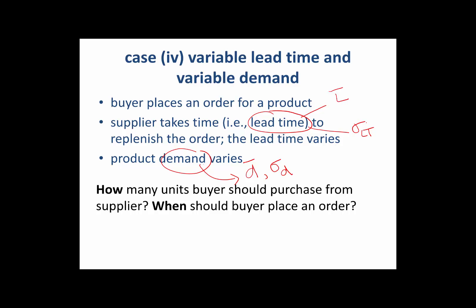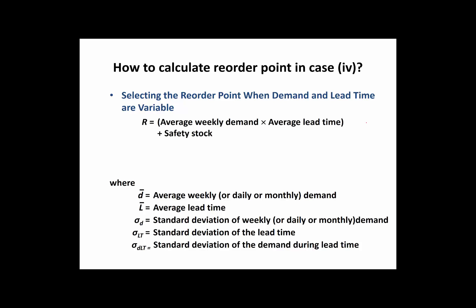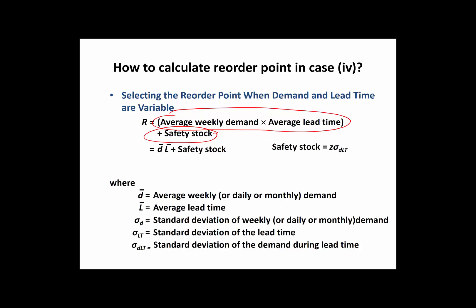In this realistic case, let's see how many units a buyer should purchase and when. First, we need to figure out how the reorder point changes. The reorder point equals a nominal value plus a safety stock. The nominal value is represented by the product of average demand and average lead time — D-bar times L-bar — plus safety stock. Safety stock is calculated as Z times Sigma-DLT, where Sigma-DLT is the standard deviation of demand during the lead time, and Z is calculated based on the customer service level.